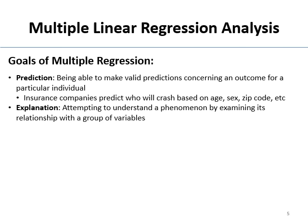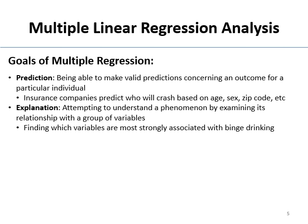You can also use regression for explanation instead of just prediction. Explanation is when you're testing theories using multiple regression by putting one variable in and saying, once I put this in, the next one isn't going to predict much — showing that this variable is more important. You can use it kind of ANCOVA-style. For example, you want to know which variables are most strongly associated with binge drinking.